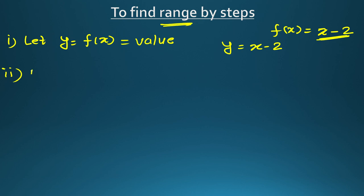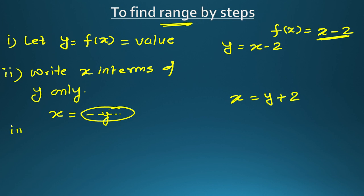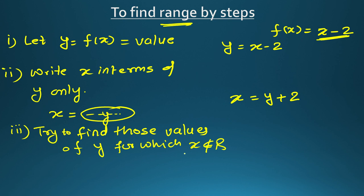The second step is to write x in terms of y only. On the left-hand side we must have only x, and on the right side an expression in y. Here it can be written as x = y + 2. After that, we check: try to find those values of y for which x cannot be defined or will not be defined in the domain, making sure you are also checking the domain.